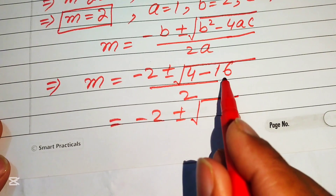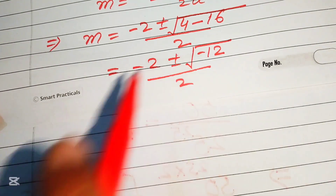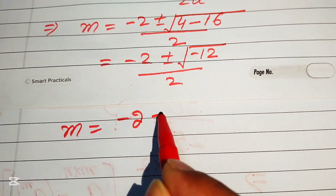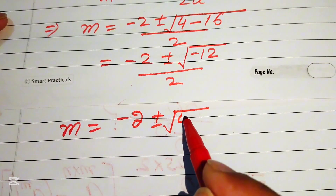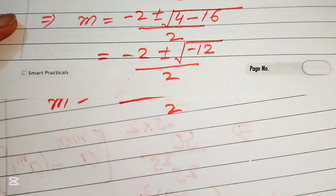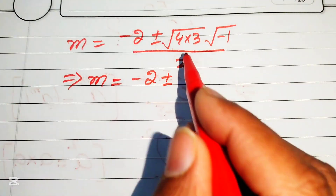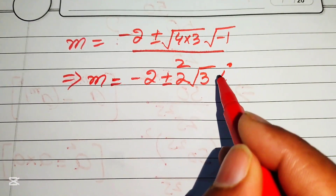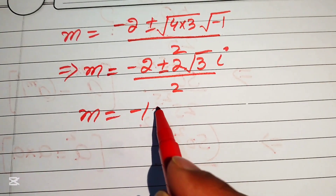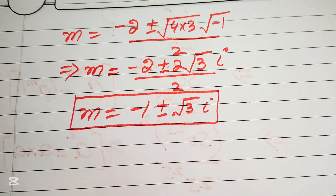Simplifying inside the root: 4 minus 16 equals minus 12. We write minus 12 as minus 1 times 4 times 3. So we get m equals minus 2 plus or minus 2 times square root of 3 times iota, divided by 2. Separating the fraction gives the two complex roots: m equals minus 1 plus or minus square root of 3 times iota.